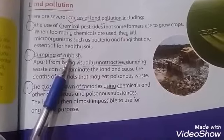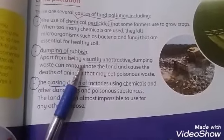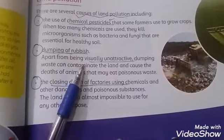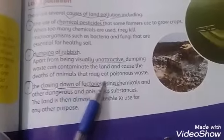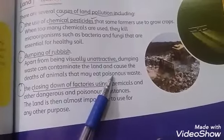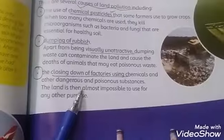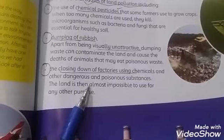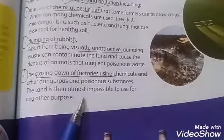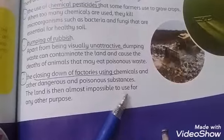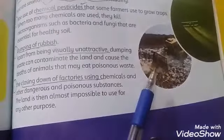The third cause of land pollution is that, apart from being visually unattractive, dumping can cause contamination and poisonous waste. The last cause is the closing down of factories, whose chemicals are very dangerous and poisonous substances, making the land nearly impossible to use for other purposes.